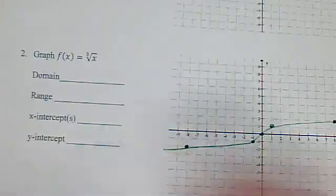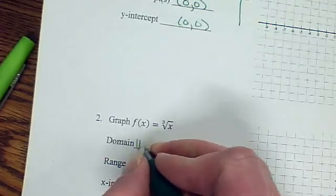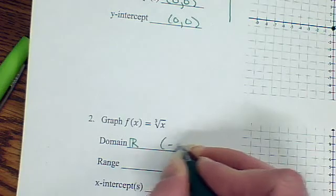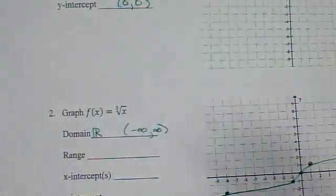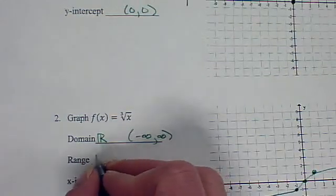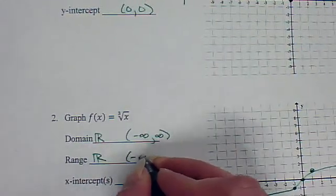Now, if we look at the domain, it keeps going. It doesn't matter what kind of number we plug in here. We can plug in all real numbers. So you can do all real numbers or negative infinity to infinity. Now, also, what we get out of this can be negative or positive. It's going to be all real numbers as well.